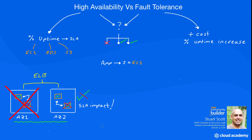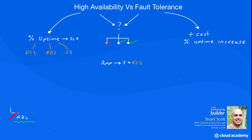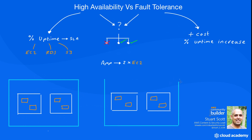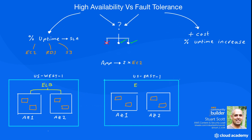So let's look at how we can take our high availability scenario and adopt it with an increased fault tolerant design approach. Previously we had our single region approach, and to increase the uptime of this solution we could deploy the app across an additional AWS region — literally mirroring the environment from a single region to a second region.